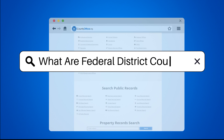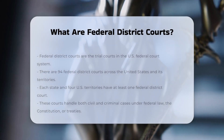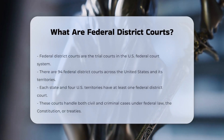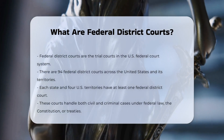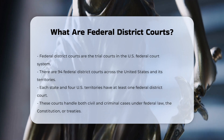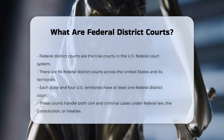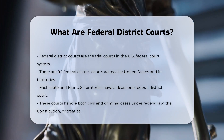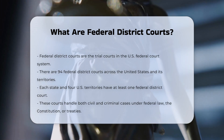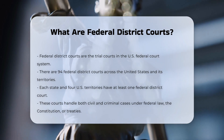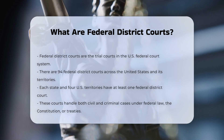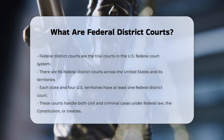What are federal district courts? Federal district courts are the trial courts within the federal court system of the United States. There are 94 of these courts, each located in a different district, with at least one district court in each state and in the four U.S. territories.